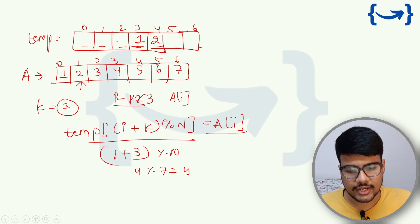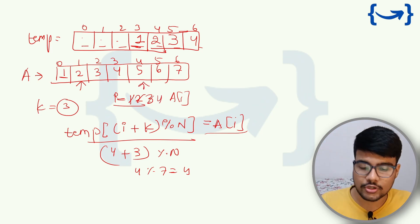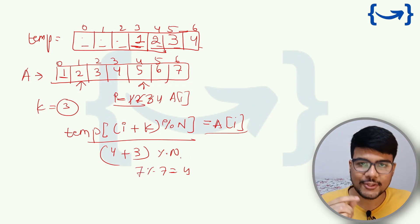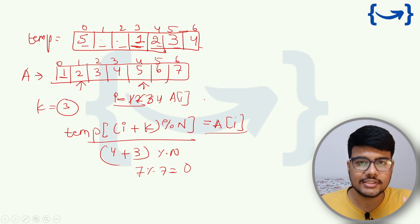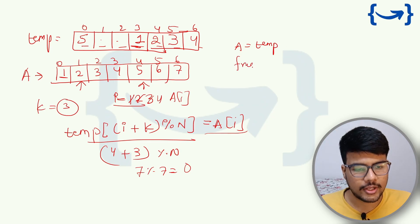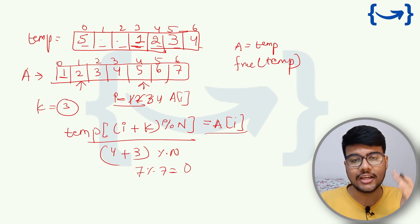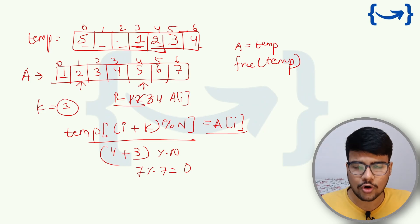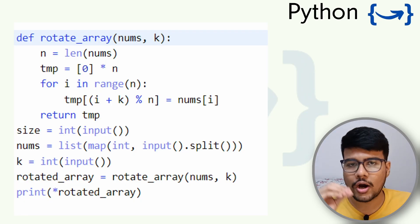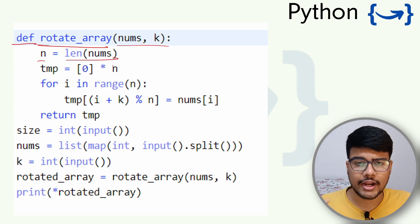After filling the temp array, copy all values back into the original array and free the temp memory. This code has been submitted by multiple students successfully. In Python, the function is 'def rotate_array(nums, k)', where n = len(nums), temp is initialized with zeros, then for i in range(n): temp[(i + k) % n] = nums[i], and finally nums is replaced with temp.